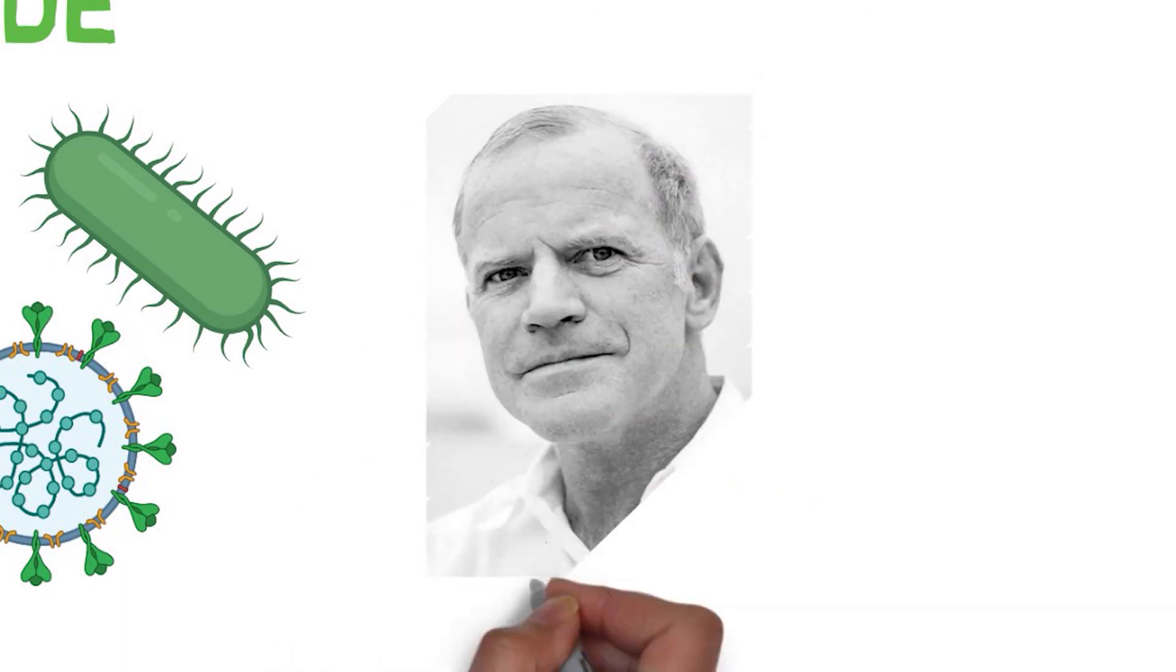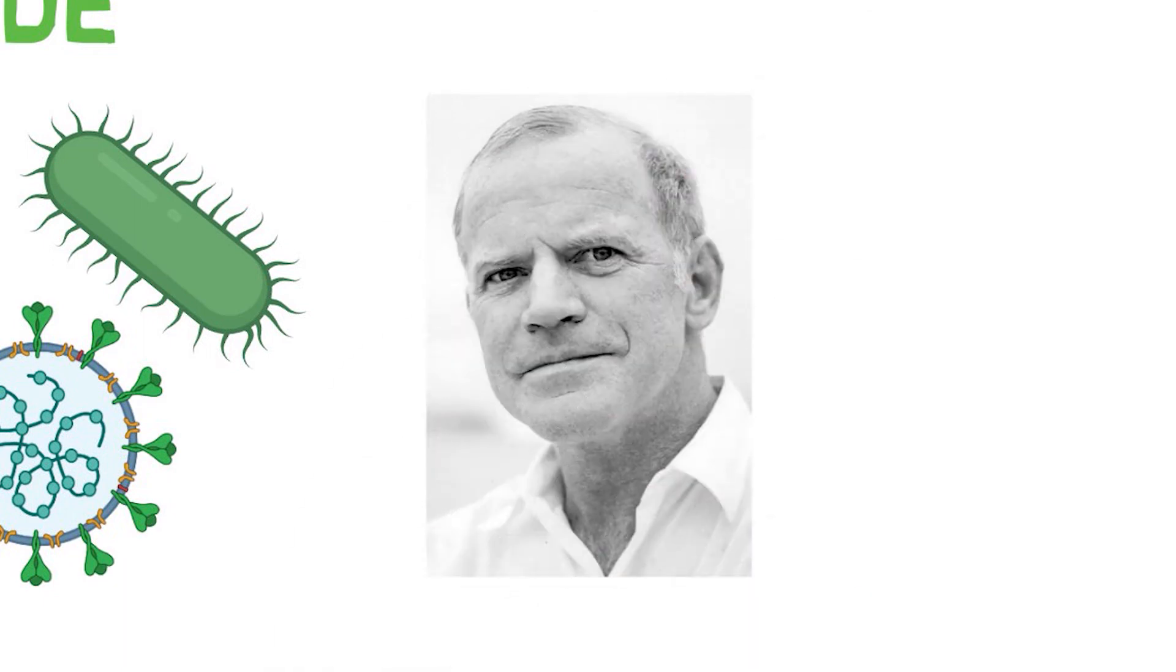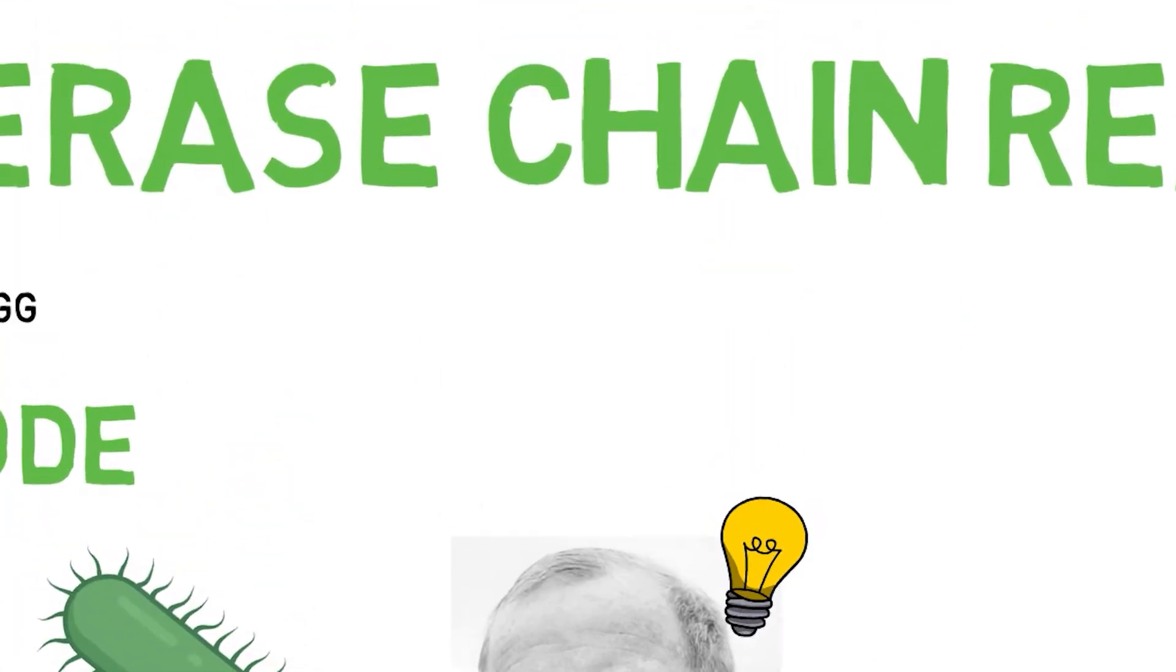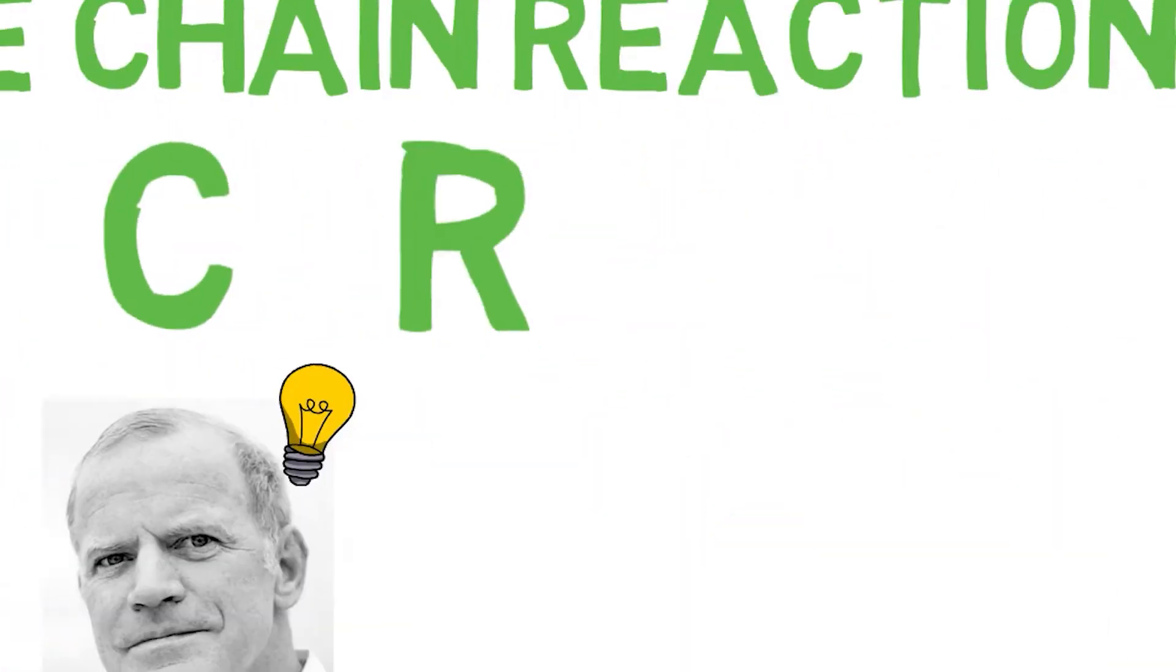In 1983, Kary Mullis came to our help. He managed to amplify the number of copies of a specific strand of DNA, allowing eventually to detect its presence. This technique is Polymerase Chain Reaction.